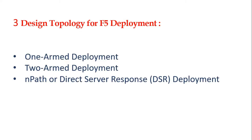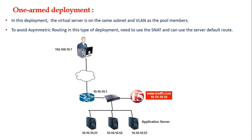There are three design topologies available to deploy F5 in our infrastructure. They are: one-armed deployment, two-armed deployment, and N-path or direct server response deployment. Let's discuss each one in detail along with a sample network diagram.